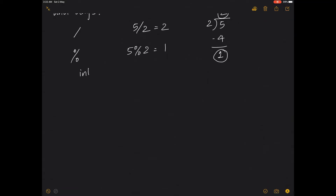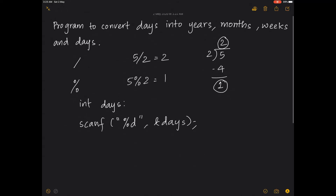I've declared days as an integer variable and asked the user for the number of days. Now, how do I convert it into years, months, weeks, and days? In such cases — whether converting days into years/months/weeks, seconds into hours/minutes, or cash into different bills — always start with the highest value unit. Here that's years, because a year has the longest number of days compared to months, weeks, or days.